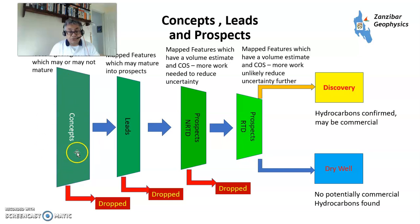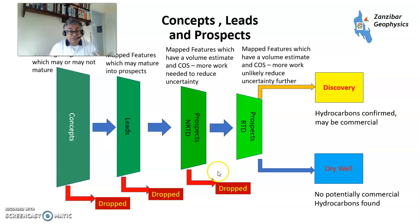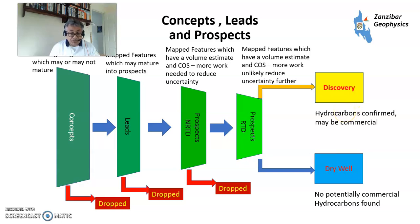A prospect has a volumetric range narrow enough and a risk chance of success narrow enough that you need to make a decision whether you're going to drill it or not. Concepts mature to leads, some may be dropped. Leads mature to prospects — not ready to drill yet, some may be dropped. Prospects that are ready to drill have quite a bit of definition, but some might still be dropped because they're not economic enough or the risk-reserve balance just isn't there. Of those drilled, some result in a discovery containing hydrocarbons, and some result in a dry well with no commercial hydrocarbons.